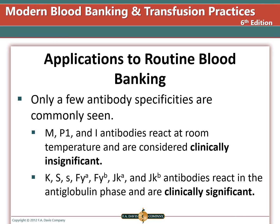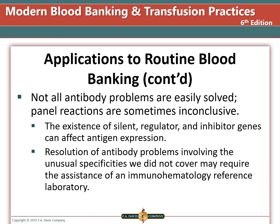Although many blood group antigens exist, only a few are commonly encountered. Antibodies that are usually not clinically significant but seen fairly often include those to M, P, and I. Clinically significant antibodies include those to Rh antigens and to Big K, Big S, Little s, Duffy A, Duffy B, Kidd A, and Kidd B. Antibodies that react in the antiglobulin phase are considered clinically significant, while those reacting only at room temperature are generally not a problem — except for antibodies to A, B, and D. Not all antibody problems are easily solved; silent, regulator, and inhibitor genes can affect antigen expression, and resolution may require an immunohematology reference laboratory.